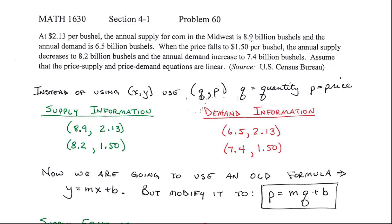Now, from the information that was given, I found two coordinate points for both supply and demand. Notice 8.9 billion bushels, that's my Q, is supplied when it's going at $2.13 per bushel. But when the price falls to $1.50, supply decreases to 8.2. So I did the same thing for the demand information.